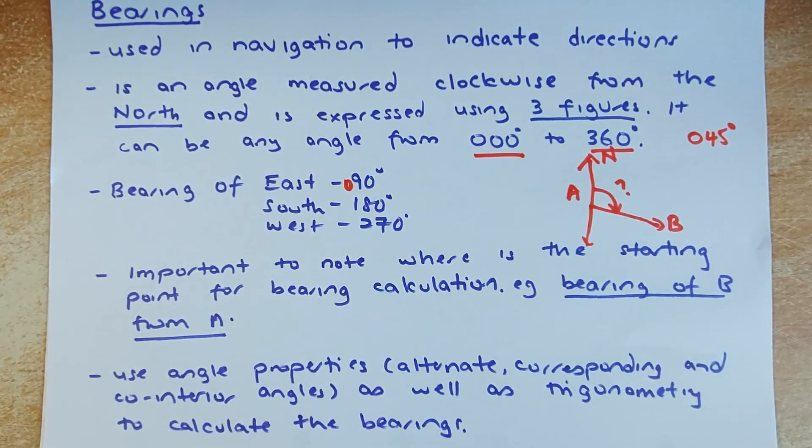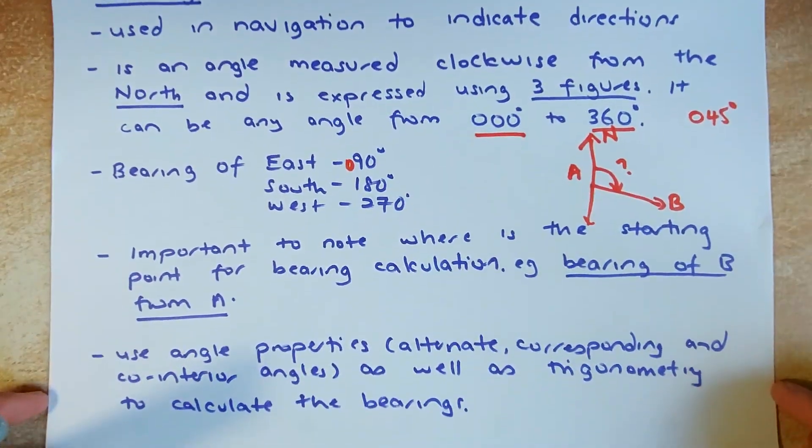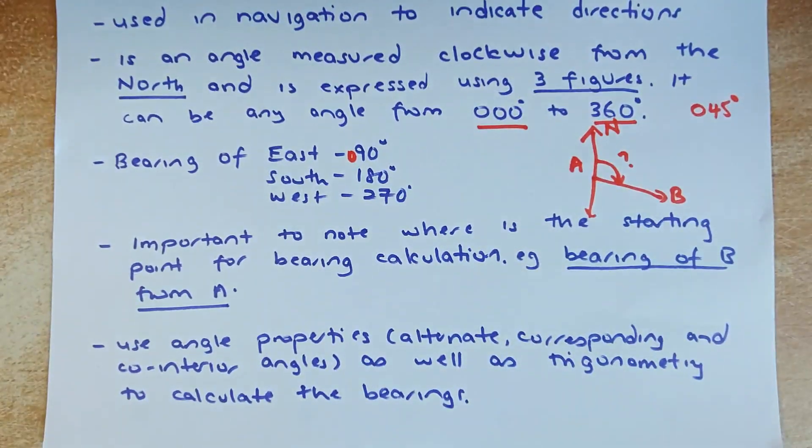It is always important to note where the starting point for bearing calculation is. For example, the bearing of B from A is different from bearing of A from B. You need to be very careful on that. You have to use angle properties: alternate angles on parallel lines, corresponding angles, or co-interior angles on parallel lines to help you solve the equation.